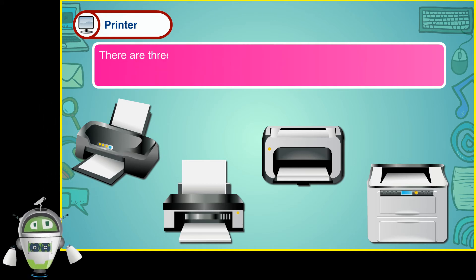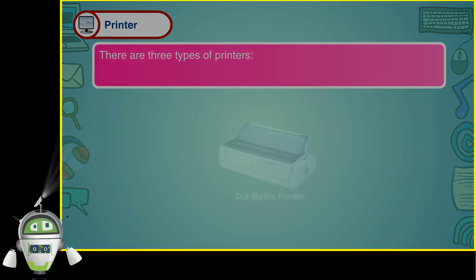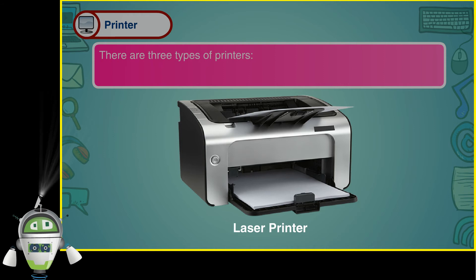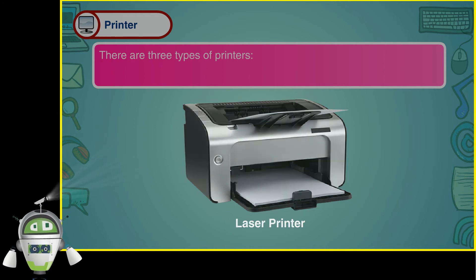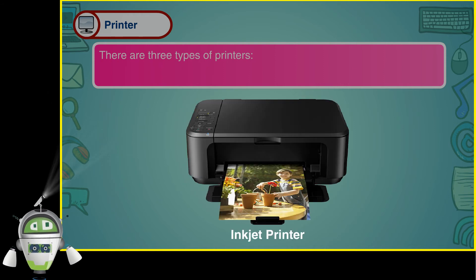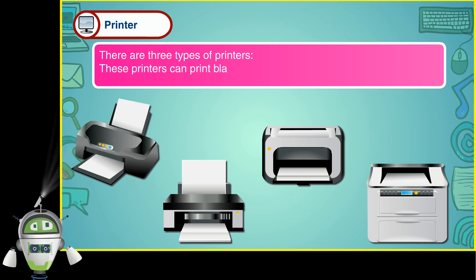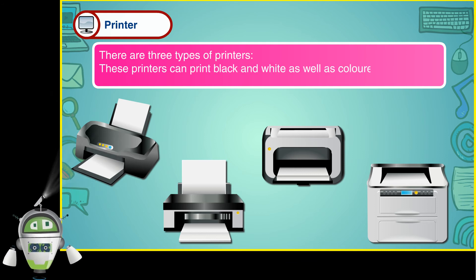There are three types of printers: Dot Matrix Printer, Laser Printer, and Inkjet Printer. These printers can print black and white as well as colored printouts.